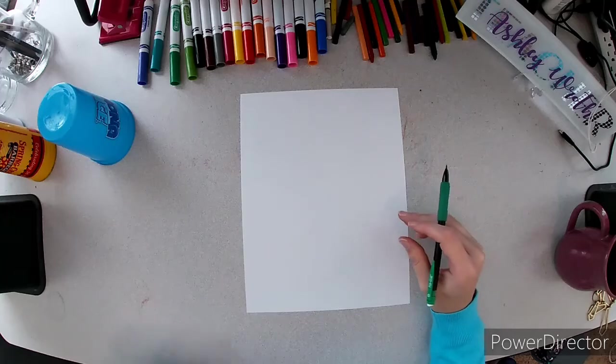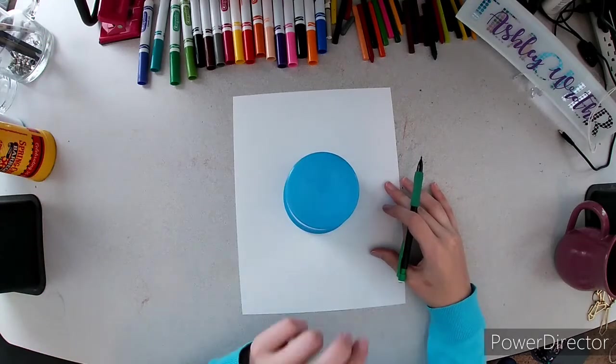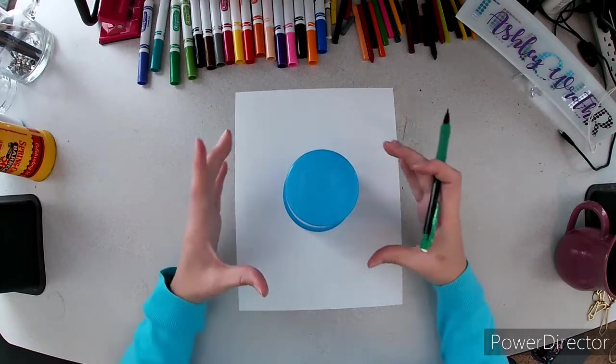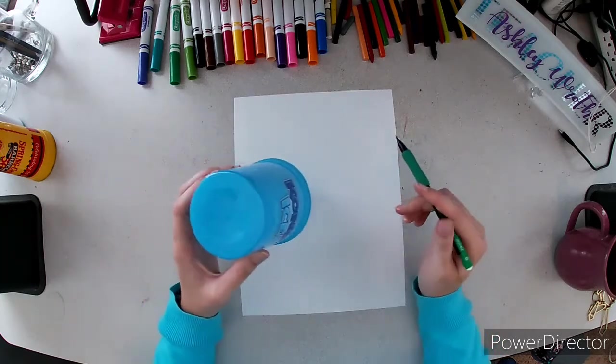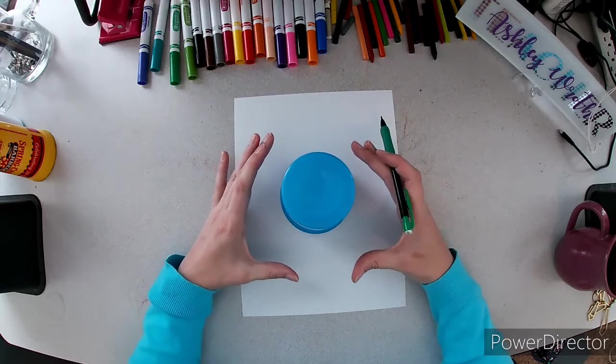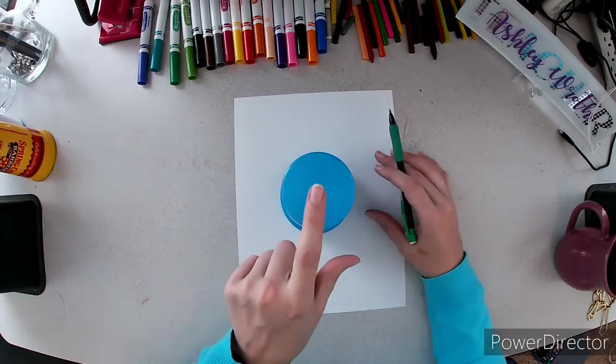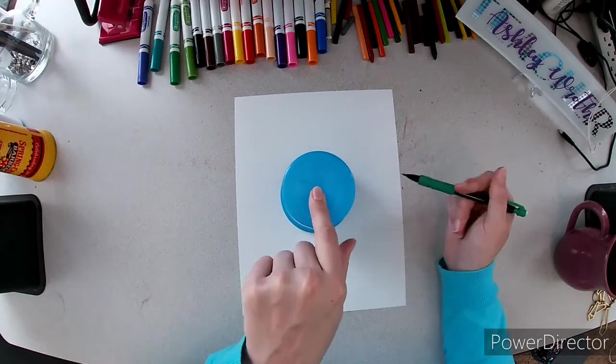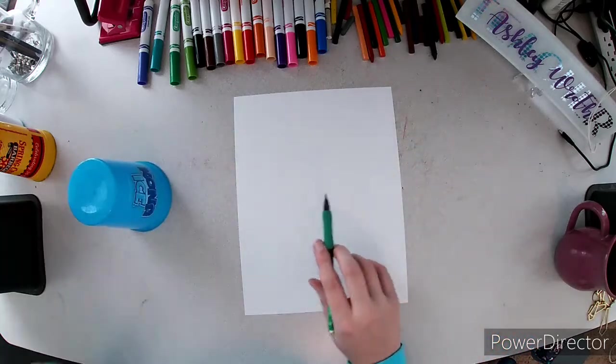Here we are going to draw a tiger. For our tiger's head we're going to start with our tracing circle. If you want to get a larger one to fill up more of the paper you can because we're just going to be drawing its head. So if you want to fill up more of the paper and get a bigger cup or maybe a bowl or something make sure you ask for permission first. I'm going to stick with this size because it's just what I have with me right now. Actually, I do have bigger cups.